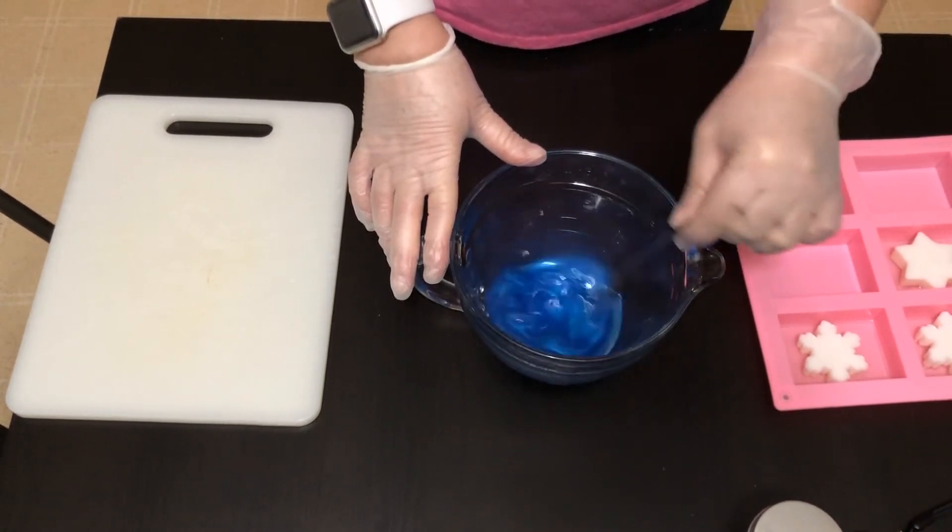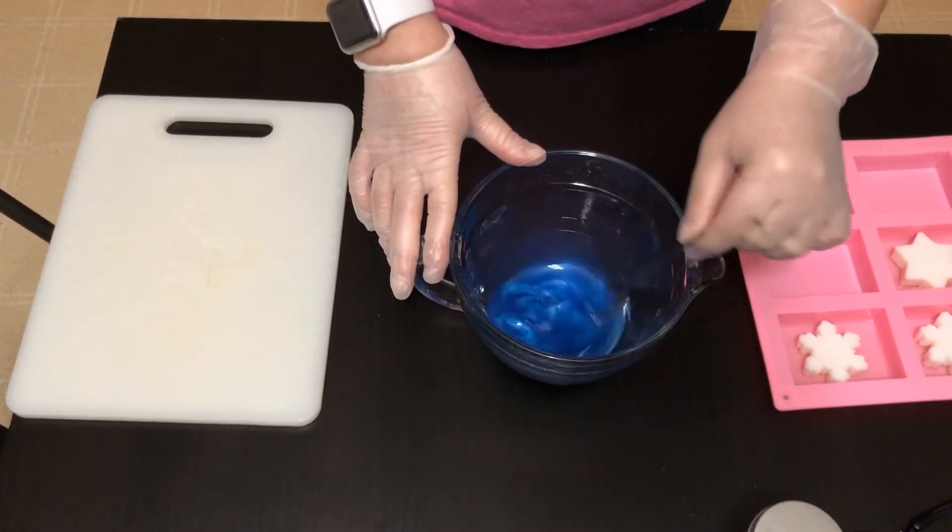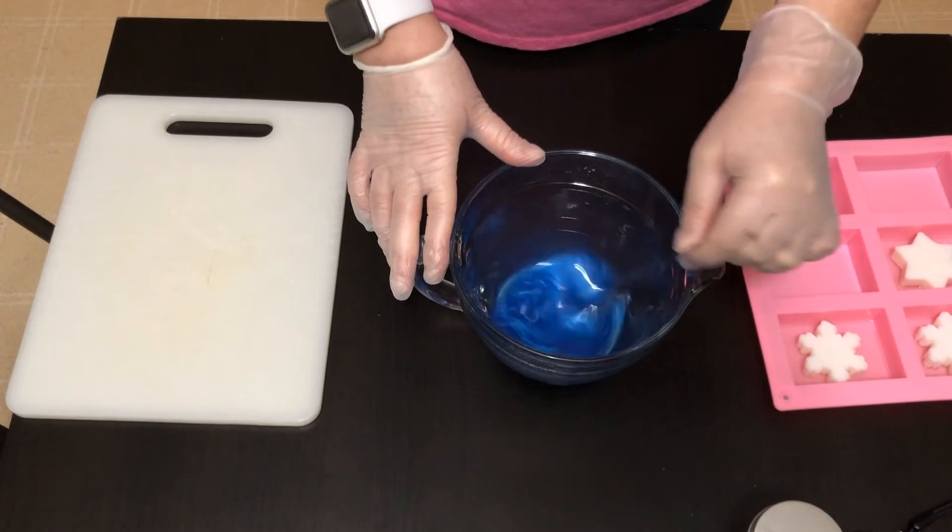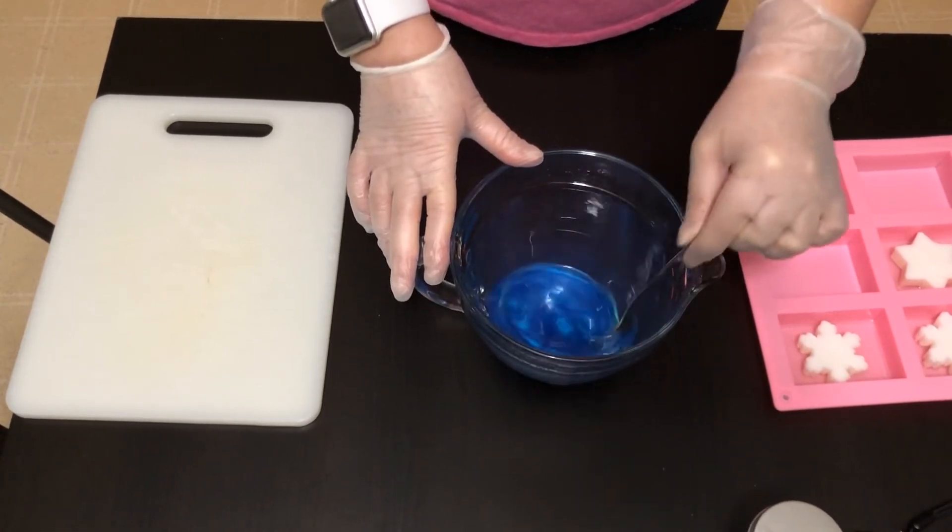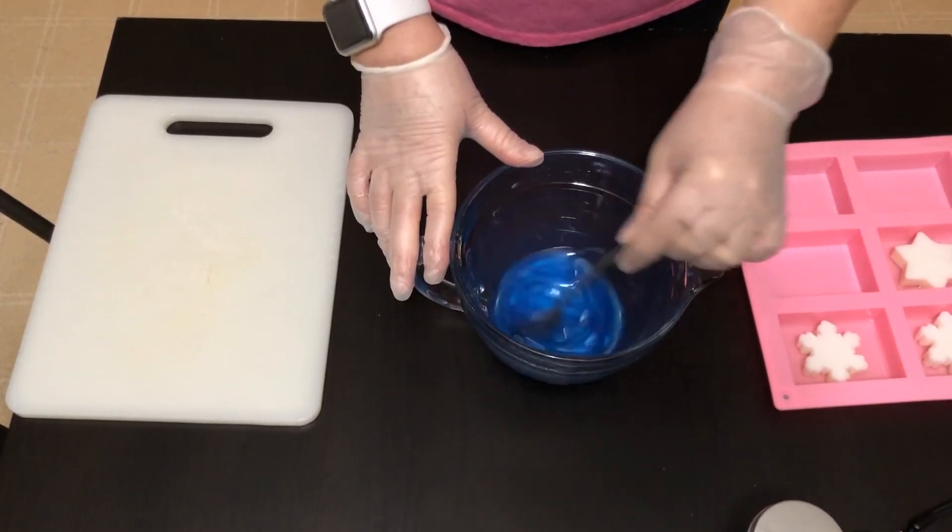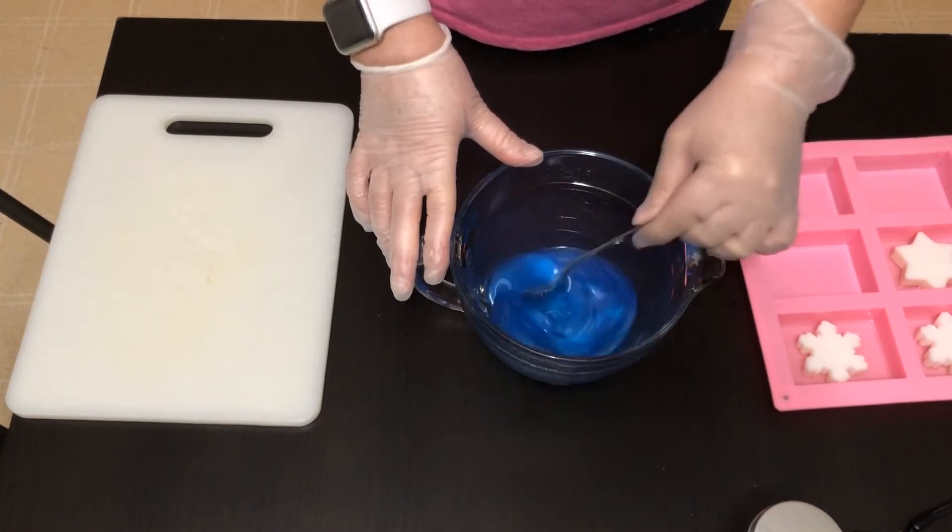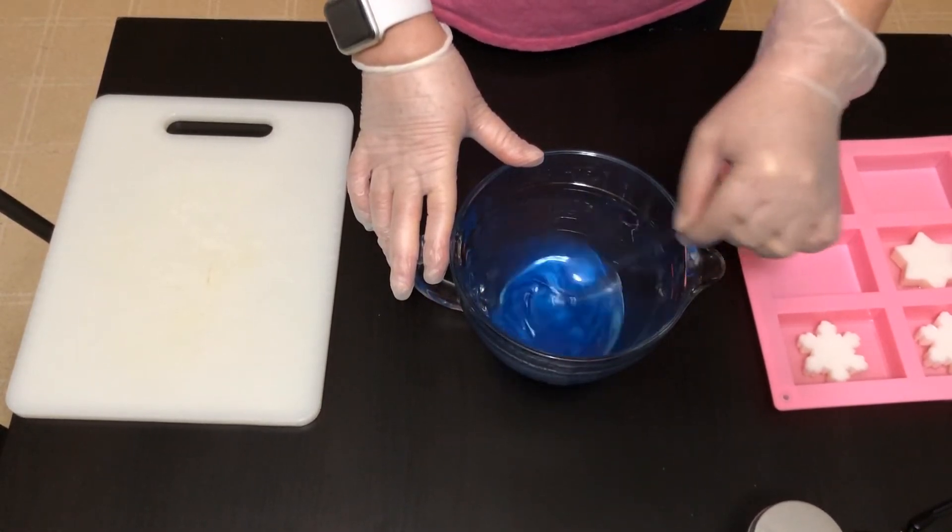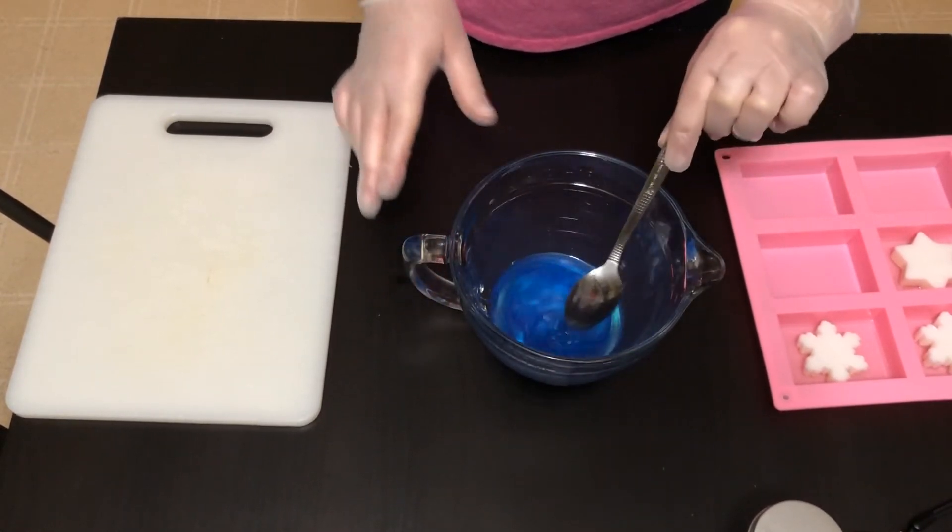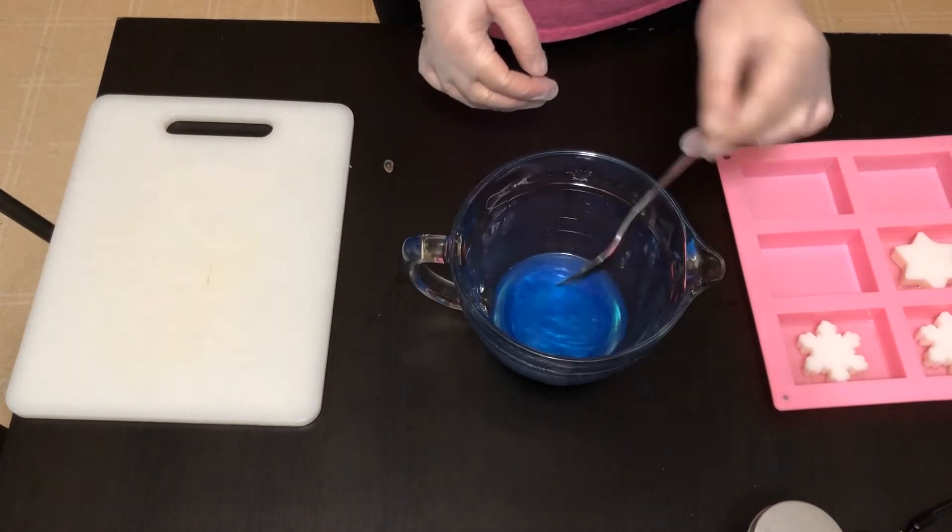If you don't have a thermometer to measure it with, once it starts to kind of get a film on top, a little bit of a skin, then you should be good to go ahead and pour. Okay, so we're just going to let this continue to cool off and then we'll come back to pour.